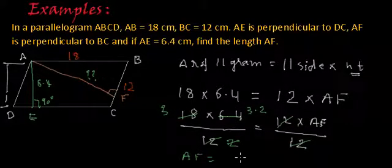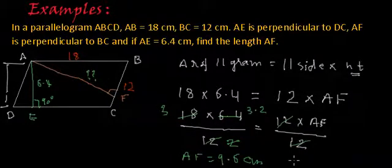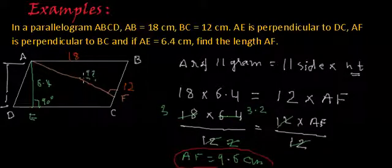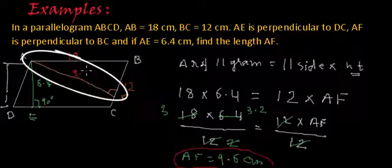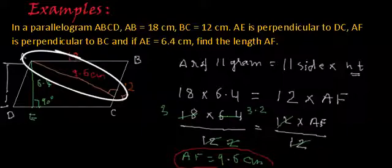AF will be equal to 3 multiplied by 3.2, which is 3 to the 6 and 3 to the 9. So AF will be 9.6 centimeters. So we have found the length of AF, which is 9.6 centimeters. And this is what we were supposed to find.